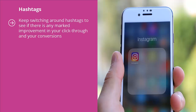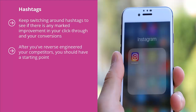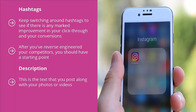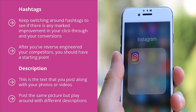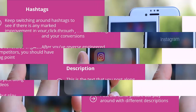Third, Hashtags — keep switching around hashtags to see if there is any marked improvement in your click-through and conversions. After you've reverse-engineered your competitors, you should have a starting point, but don't end there. Keep playing around with hashtags, customize them, and research related hashtags to see if you can get better results. Fourth, Description — this is the text you post along with your photos or videos. Post the same picture but play around with different descriptions and calls to action to see if they lead to greater click-throughs and eventually greater conversions.